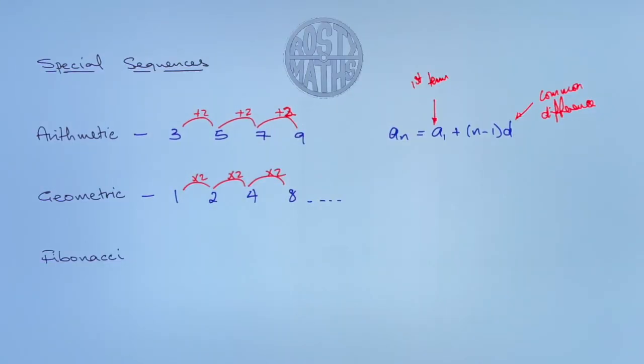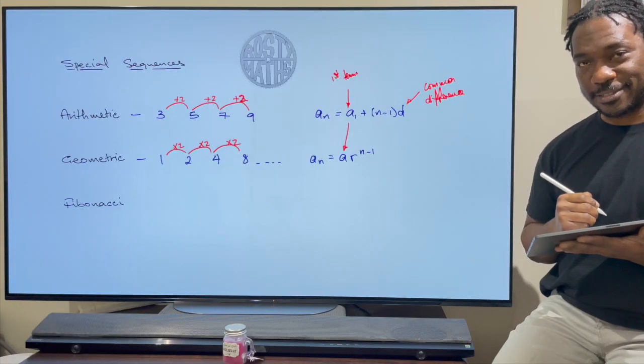Now what does the nth term for that look like? So an is going to be a times r to the power n minus 1, and the a again in this case is my first term.